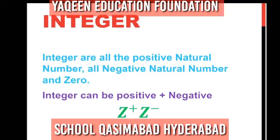What are positive integers and negative integers? If I present this example: 3 minus 4 — when I subtract 4 from 3, the answer is minus 1. This minus 1 is called a negative integer.